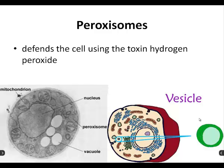Peroxisomes are pretty sweet — they defend the cell using the toxin hydrogen peroxide, which is actually why we call them peroxisomes since they make peroxide. On an electron micrograph, they're almost indistinguishable from vesicles. A lot of people think peroxisomes are just some kind of highly modified vesicle. Your liver produces the enzyme catalase to protect the rest of your body from the harmful peroxide in case the peroxisomes go haywire. Make sure you have it on your worksheet and bingo board.